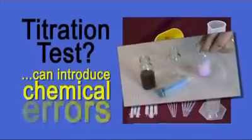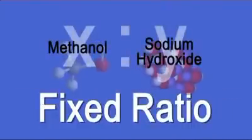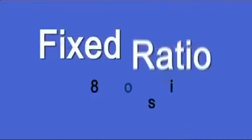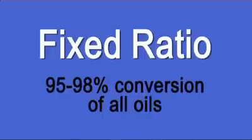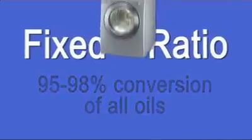The Kent Master System simplifies the process by avoiding a titration test altogether and uses a fixed ratio of the two chemicals, which will convert between 95% and 98% of all oils going through the process, leaving less room for chemical errors.